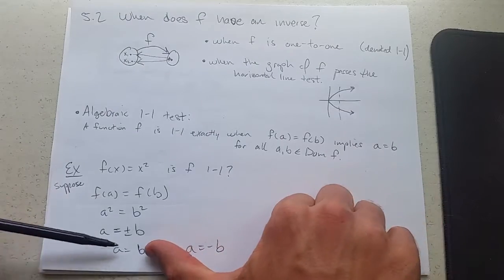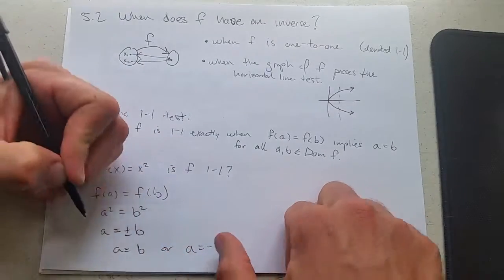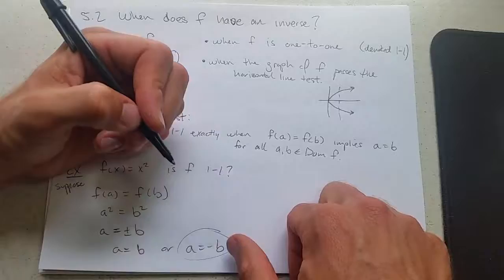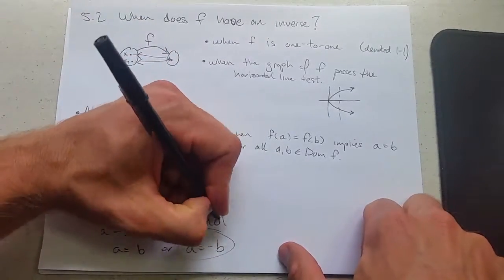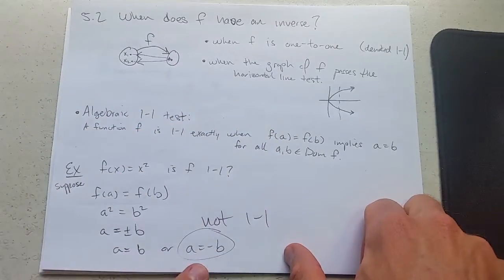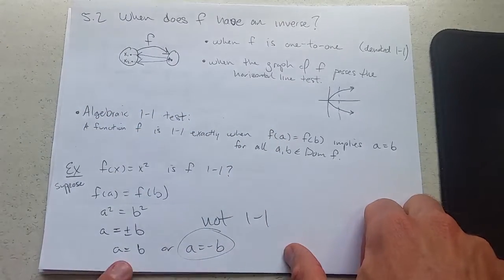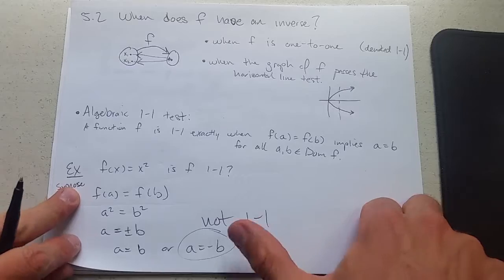Now the problem comes in because a does not necessarily have to equal b. The problem comes in right here. So this is bad. This is not one-to-one because a was supposed to only equal b, but a could also equal negative b.